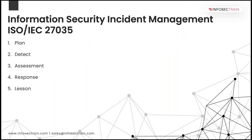The second framework, most commonly used, is ISO/IEC 27035 — information security incident management. It has been described in five phases. First is plan and prepare: you establish your management policy, form a team, and plan for these things. Then there is detection and reporting: if someone has spotted something, they report that event because that event might turn into an incident. You detect them and report them before they turn into an incident.